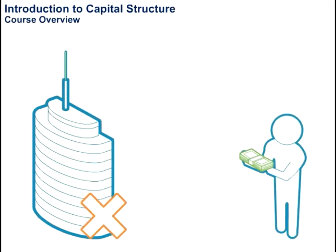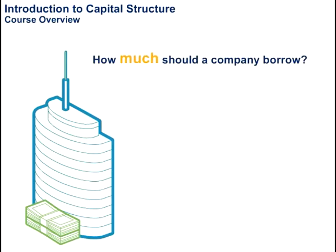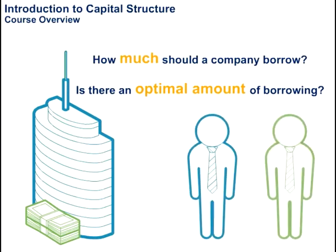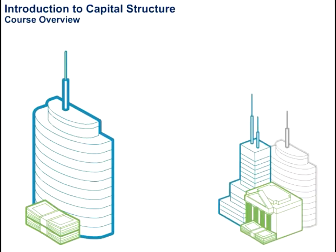Some companies do not borrow while others borrow extensively from banks and from capital markets. How much should a company borrow? Is there an optimal amount of borrowing? These questions were first addressed by two Nobel laureates, Merton Miller and Franco Modigliani. All companies obtain funds from shareholders; most companies also borrow money either from banks or from capital markets.